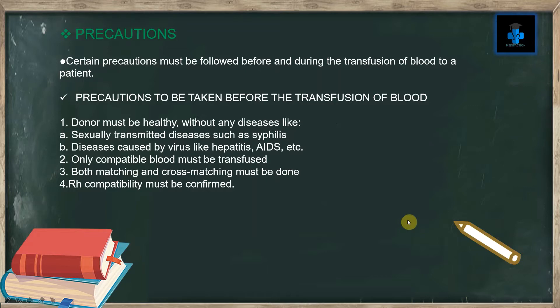Certain precautions must be followed before and during the transfusion of blood to a patient. Precautions to be taken before transfusion: number one, the donor must be healthy without any diseases like sexually transmitted diseases such as syphilis, or diseases caused by viruses like hepatitis, AIDS, etc. Number two, only compatible blood must be transfused. Number three, both typing and cross matching must be done. Number four, Rh compatibility must be confirmed.